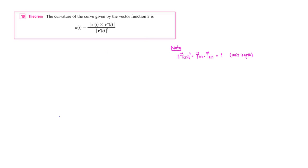Since a tangent vector is a unit vector, its magnitude is going to be 1. So the magnitude squared — which is equivalent to the dot product with itself — is equal to 1, which makes sense because it is a unit length.